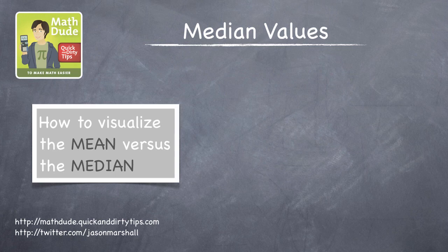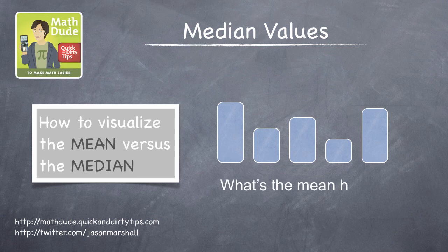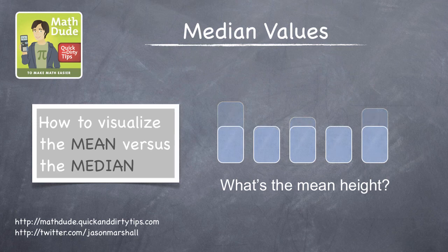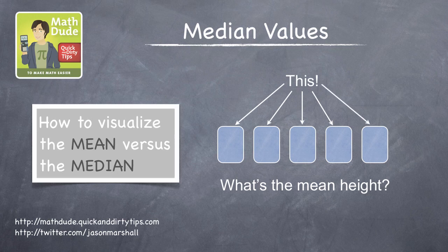Imagine you have five identical glasses filled with different amounts of water. What's the mean height of water? We'll imagine pouring water from one glass to another until the heights are exactly the same in all of them. What's the mean height? This, the resulting height, is the mean value, which is the value you get by uniformly spreading out whatever you're averaging.